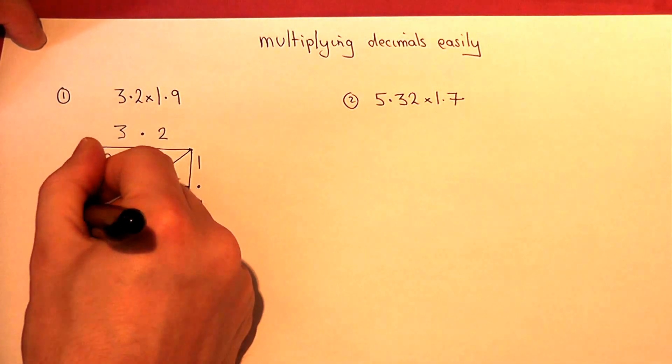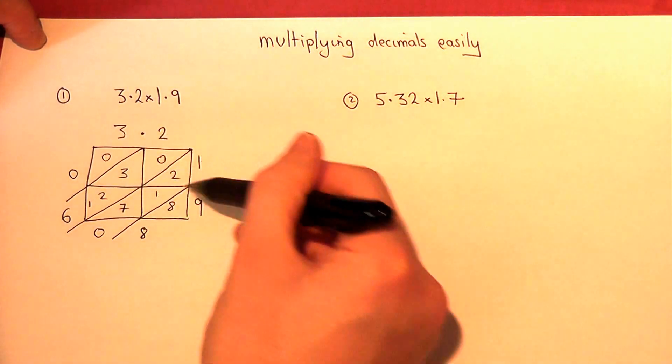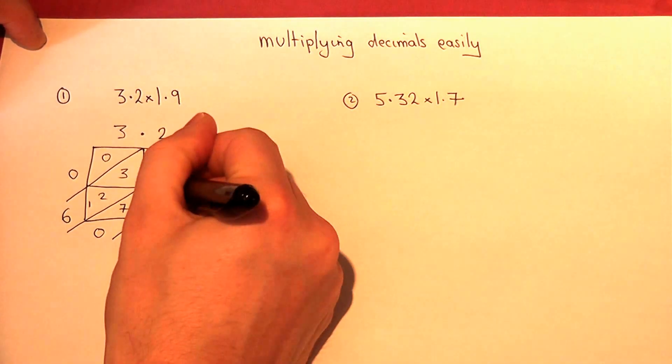1 plus 2 plus 3 is 6. 6 and 0 is 0. I then find where the decimal points meet. I go down and across. They meet here.